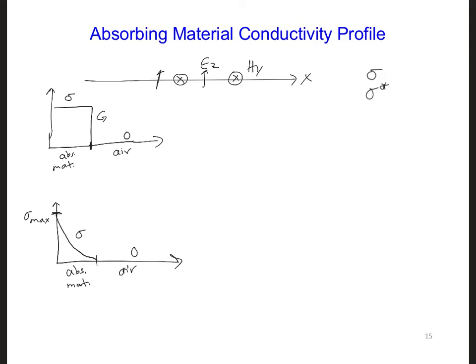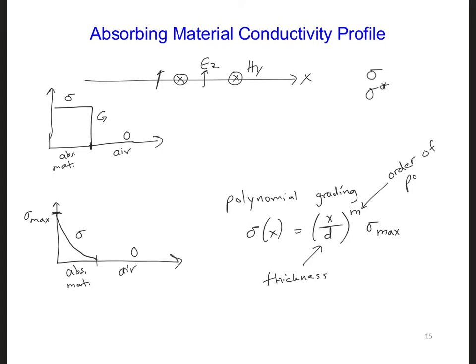A commonly used profile for this gradual increase of sigma and sigma star is a polynomial grading, and we're going to be using this as well. So here, sigma of x, this changes with position x, is x over d to the power m times sigma max. So d here is the thickness of the absorbing material, m is the order of the polynomial, and sigma max is the maximum value of sigma that is reached at the far edge of the grid. So that's this here, that's adjacent to the PEC. So we still have sigma is equal to infinity, we still have a PEC here at the very far left edge of the grid.